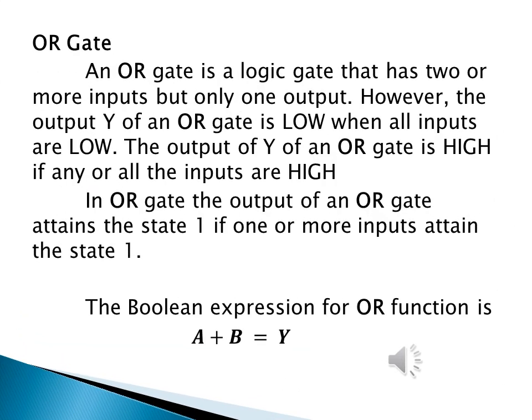Now let us see what is an OR gate. An OR gate is a logic gate that has two or more inputs but only one output. The output Y of an OR gate is low when all the inputs are low, whereas the output Y is high if any or all the inputs are high. The output of an OR gate attains the state 1 if one or more inputs attain the state 1. In expressing the logic gates, we need the boolean expression.